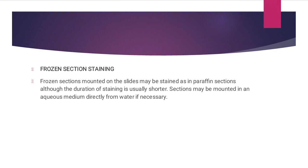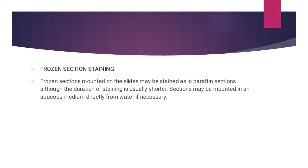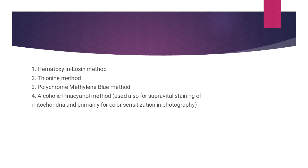For frozen section staining, frozen sections mounted on slides may be stained as in paraffin sections, although the duration of staining is usually shorter. Sections may be mounted in an aqueous medium directly from water if necessary. Methods include: first, the hematoxylin-eosin method; second, the cyanide method; third, the polychrome methylene blue method; and fourth, the alcoholic pinacyanol method, which is used also for supra vital staining of mitochondria and primarily for color synthesis in photography.